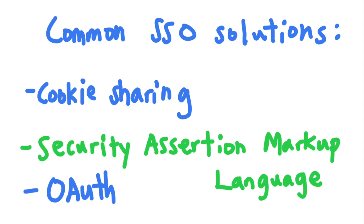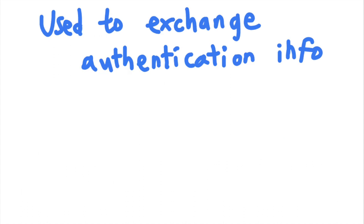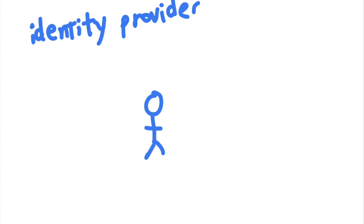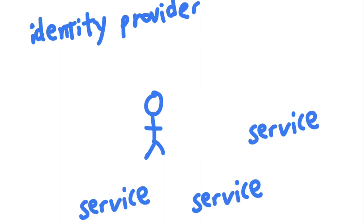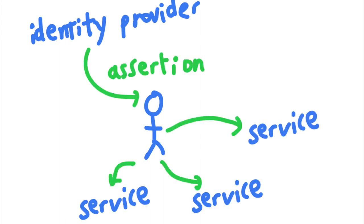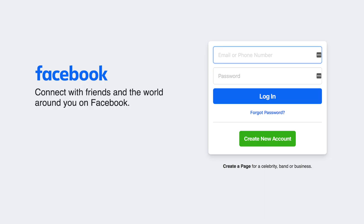SAML is an XML-based markup language used as a mechanism for exchanging authentication data between an identity provider and a service provider. SAML enables SSO by facilitating the interaction between three parties: the user, the identity provider, and the service provider. The user is you, who has the right to access your information on a website. The identity provider is the server in charge of authenticating the user — it asks the user for proof of identity, and once logged in, passes the user's information to all services the user is trying to access. The service provider refers to the actual site the user intends to access, such as Facebook and Messenger.